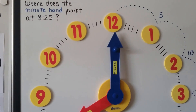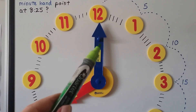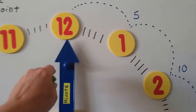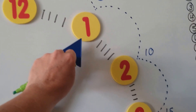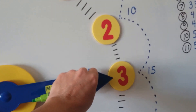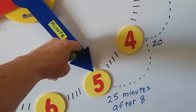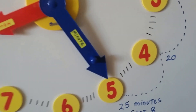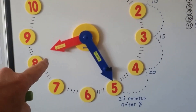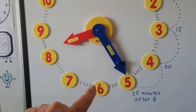Let's take a look at the big clock. Where does the minute hand point at 8:25? We skip count each number by fives. Right now it's at eight o'clock. If it goes to the one, that's five minutes; the two is the 10-minute mark; the three is 15 minutes; the four is 20 minutes. So to be at 25 minutes after eight, the minute hand would be pointing on the five. That's 8:25, and see how the hour hand is moving away from the eight, getting between the eight and the nine.